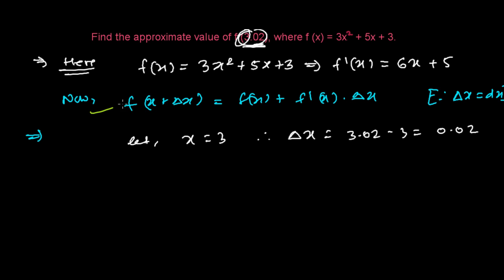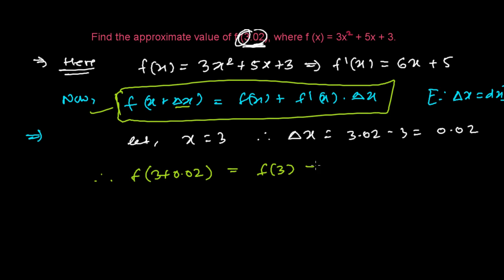Now let's put all the values of x into the formula. This is our formula. If you want to know how this formula came, I suggest you go back to the first two or three videos where you will get a very good explanation. So now f(x + Δx) is f(3 + 0.02), and f(x) is f(3), and then f'(x)—the derivative of x is 6x + 5. So if x is being replaced by 3, then it will be 6 times 3 plus 5, times Δx which is 0.02.